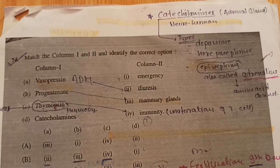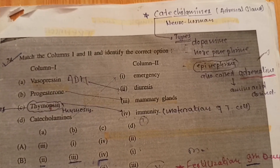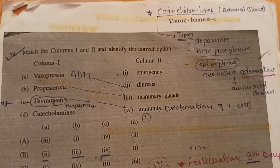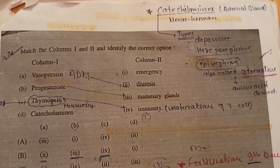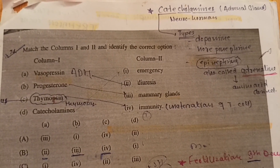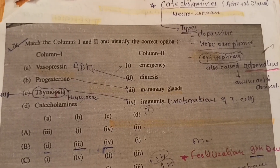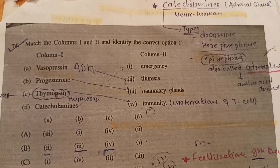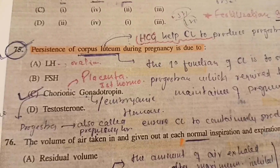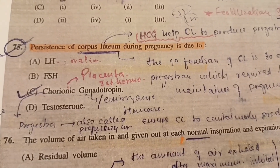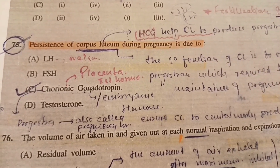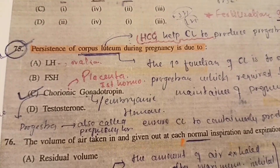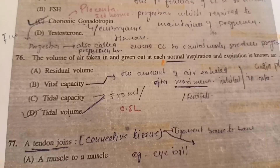Question 74: Match the columns — vasopressin with diuresis, progesterone with mammary glands, thymosin with immunity, catecholamines with emergency response. Question 75: Persistence of corpus luteum during pregnancy is due to — answer will be C, chorionic gonadotropin.